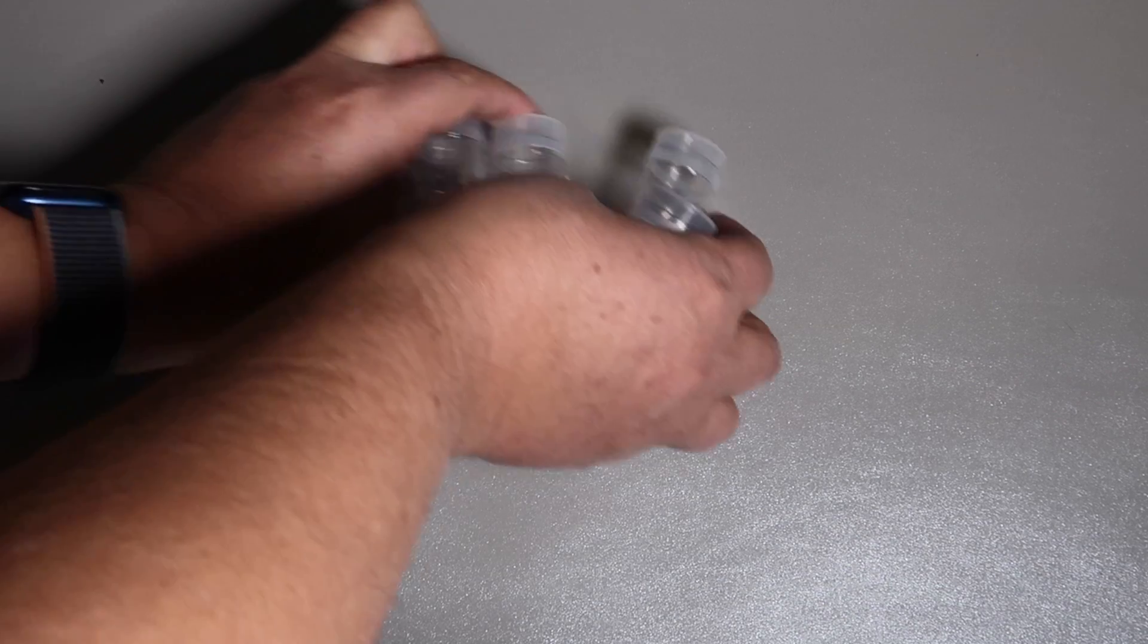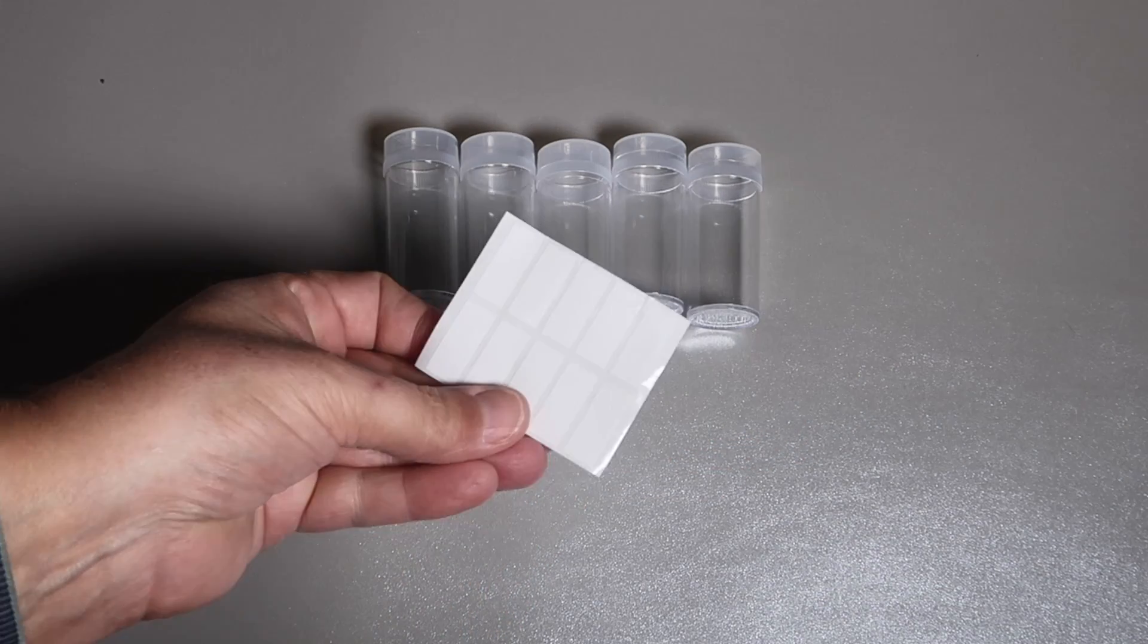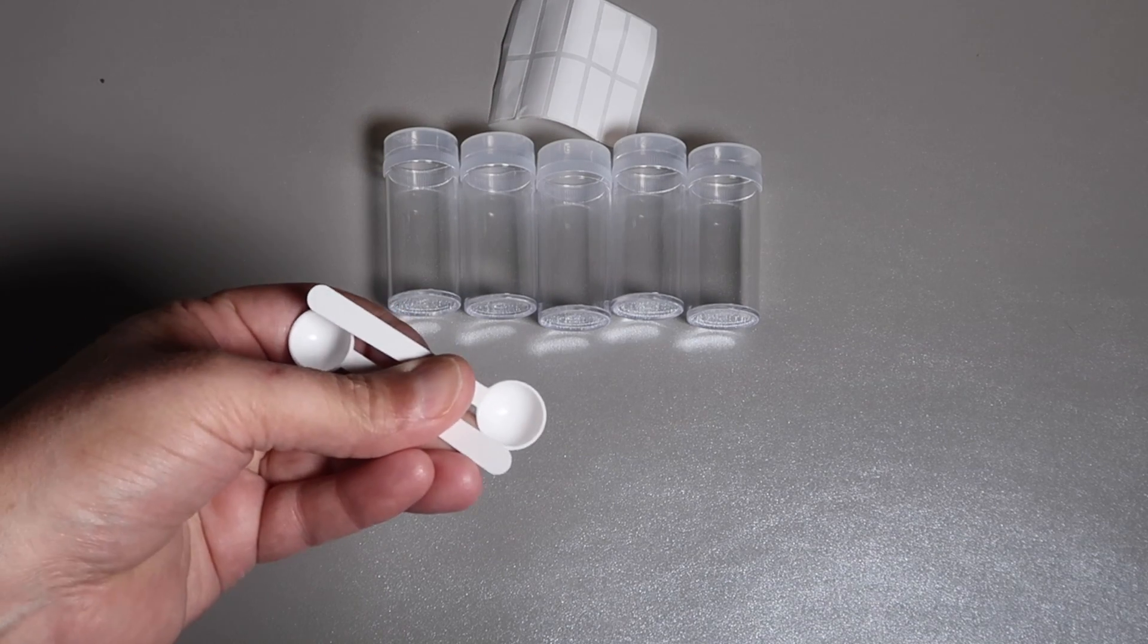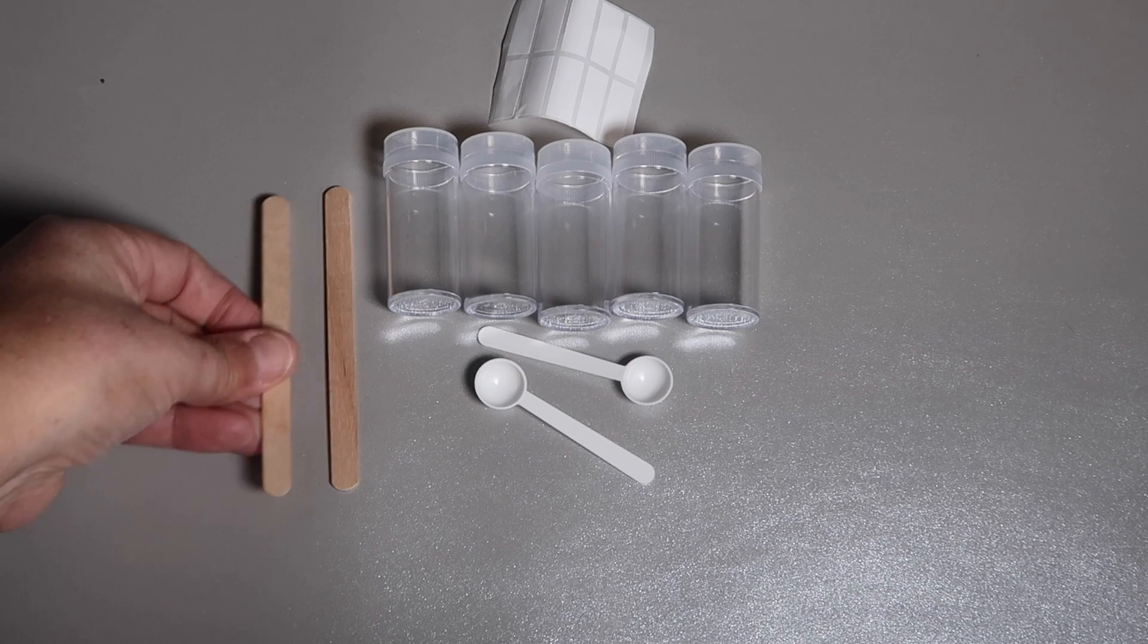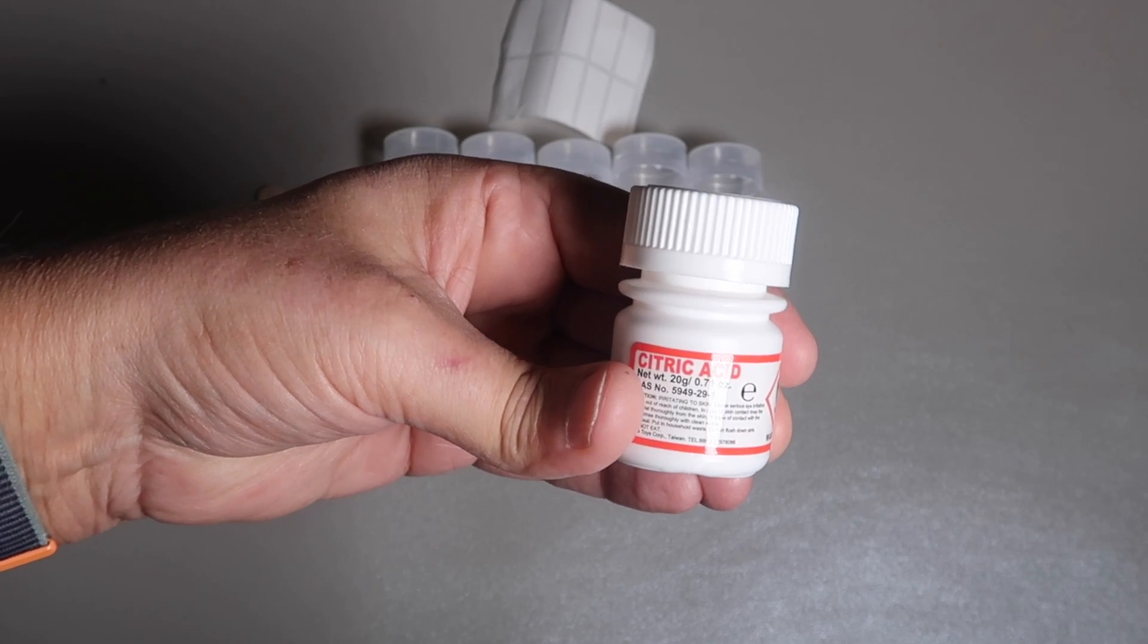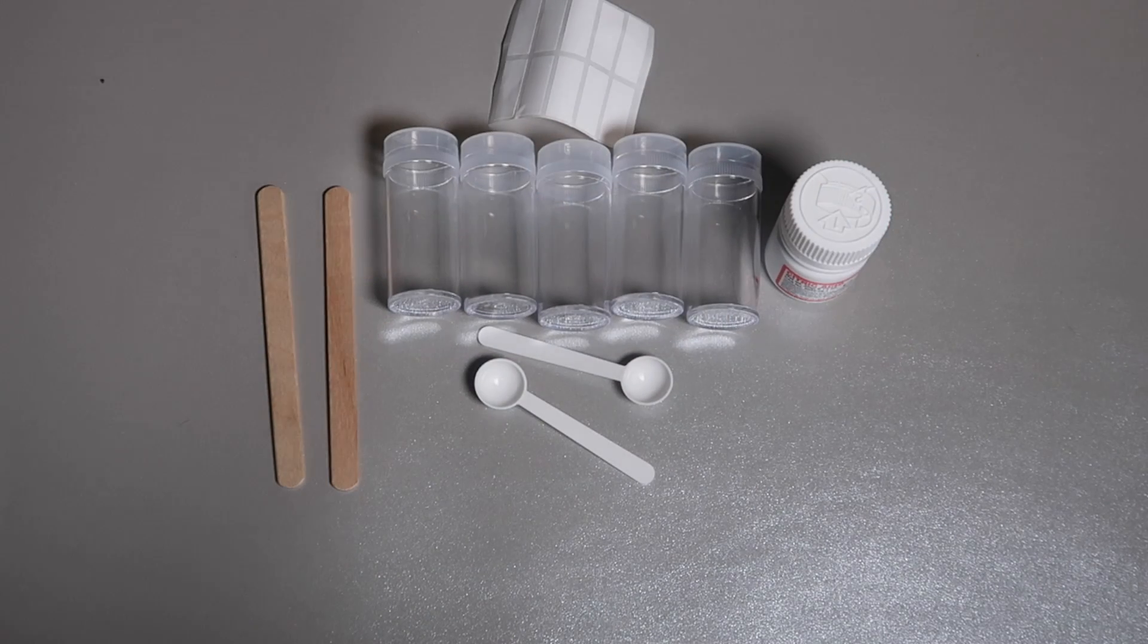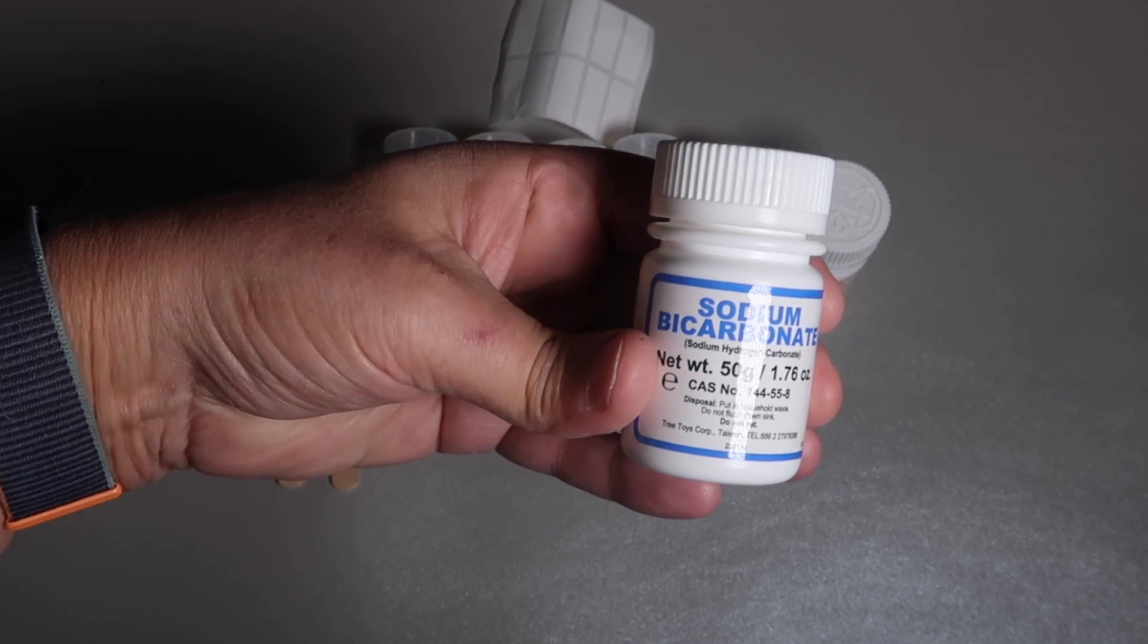Inside the chemical analysis bag are five test tubes, some labels for labelling the test tubes, two scoops, two stirring sticks, a bottle of citric acid, and a bottle of sodium bicarbonate.